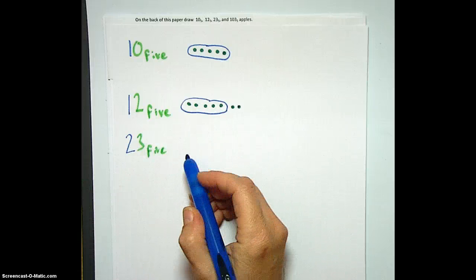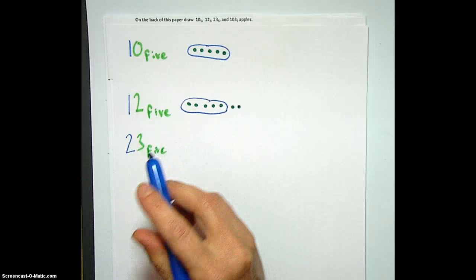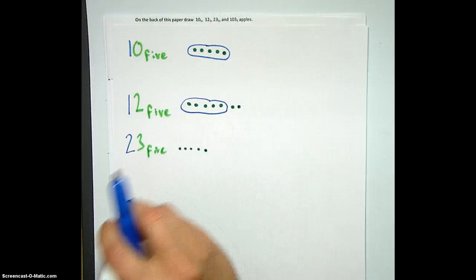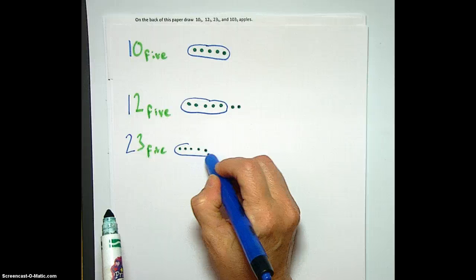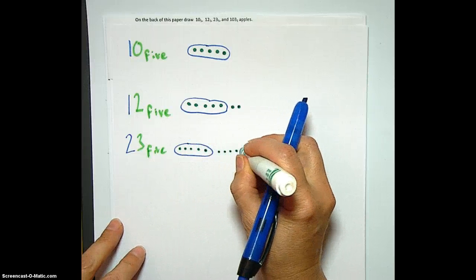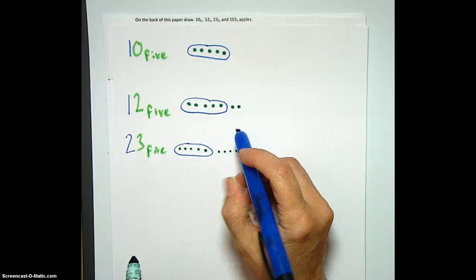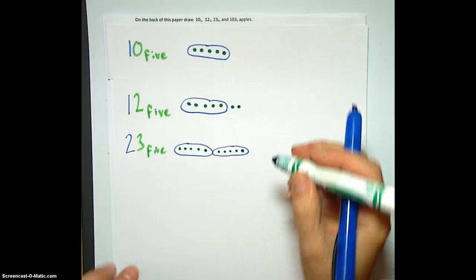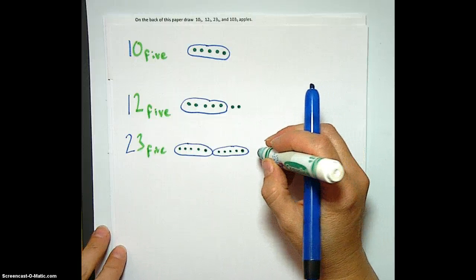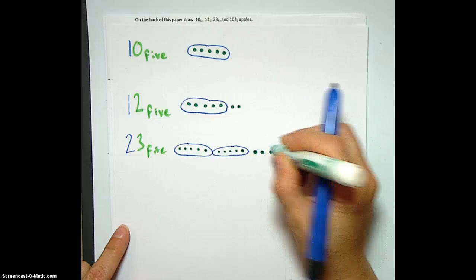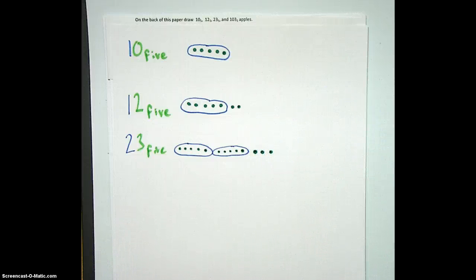So we need 2 groups of 5. So let's do that really quick. 1, 2, 3, 4. Boop! 10. 1, 2, 3, 4. Boop! 20. Let's make those. So here we have 20, 21, 22, 23. They got bigger, but it's okay.